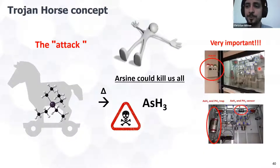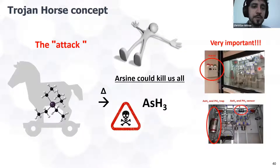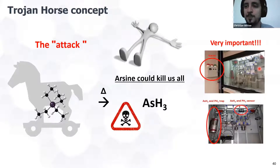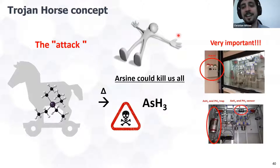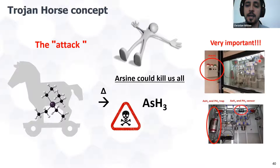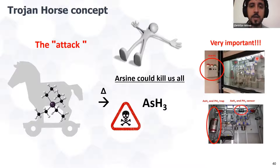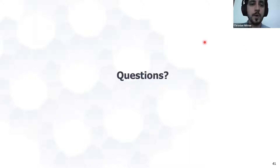This is the concept of the Trojan horse — we were forming arsine during calcination, and when we reduce, we favor arsine formation. This experiment was very stressful because of the toxic arsine gas release. It is very important to have traps and sensors to avoid any health problem. This concludes the first part of my talk, and we can open for questions.